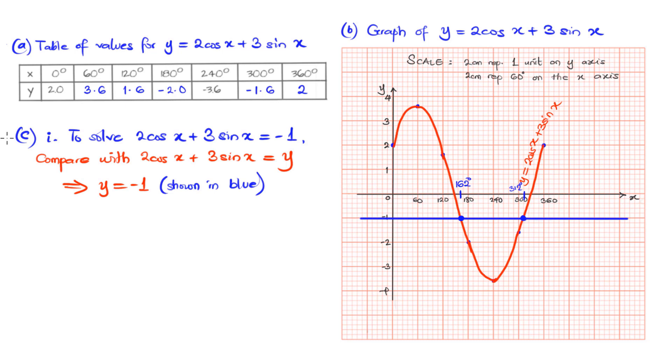Here we now have that the solution as we have traced from the line y = -1, which is shown in blue, the sinusoidal curve is giving us a solution to this equation 2cos(x) + 3sin(x) = -1 to be x = 162° and x = 312°. That is the solution to this particular equation that we are asked to find using the graph.